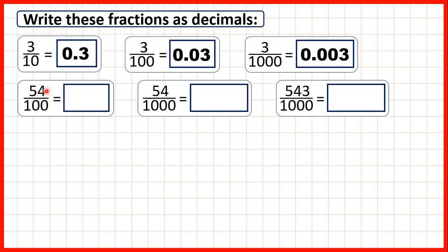Now we have 54 hundredths. The hundredths digit is the second digit after the decimal point, and the denominator of a hundred tells us that when we write the fraction as a decimal we can only have two digits after the decimal point — we can't go beyond the hundredths place value column. So 54 hundredths is written as 0.54, and that means the five gets pushed over into the tenths column.